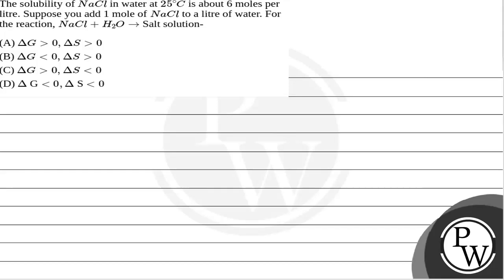Let us read the question. The question is: the solubility of NaCl in water at 25 degrees Celsius is about 6 moles per liter. Suppose you add 1 mole of NaCl to a liter of water. For the reaction NaCl plus H2O, that is salt solution.